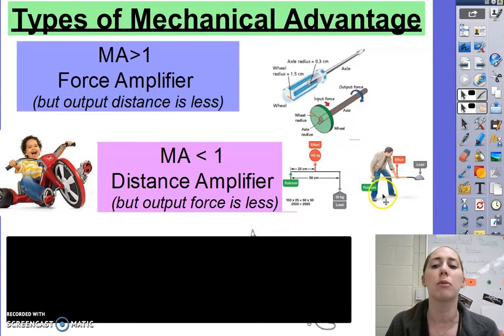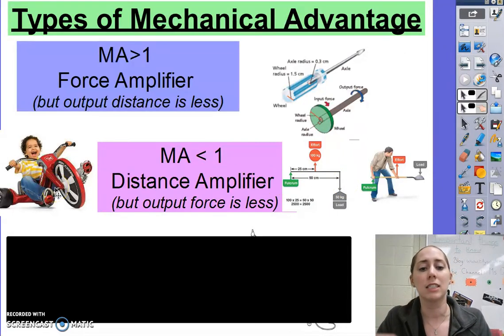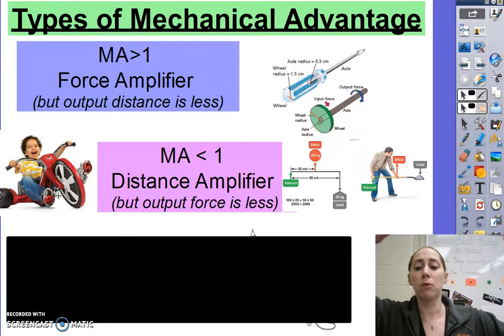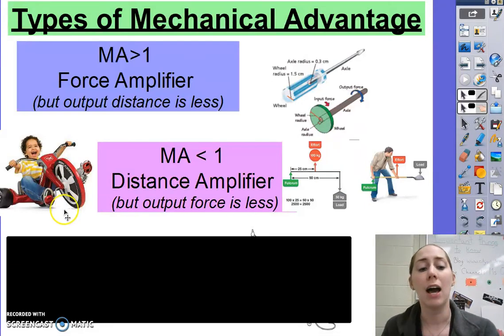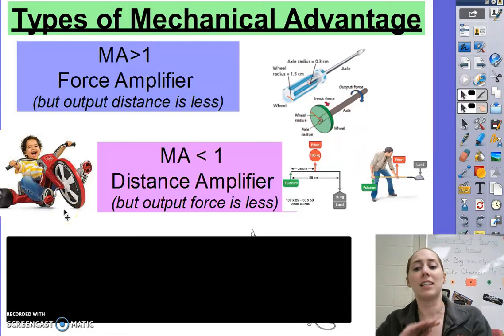So think about lifting something with a shovel. With fulcrum points here at the end, you're putting effort here. Your distance is a short amount. But the longer distance of the machine is much bigger. Or like a tricycle. If your feet are pedaling in a smaller distance, but the big wheel is turning in a bigger distance. However, the output force is less. You have to pedal a lot to get that wheel to go pretty far.